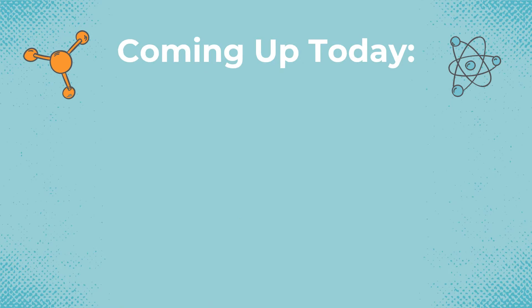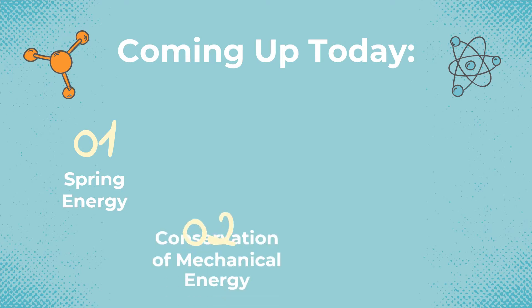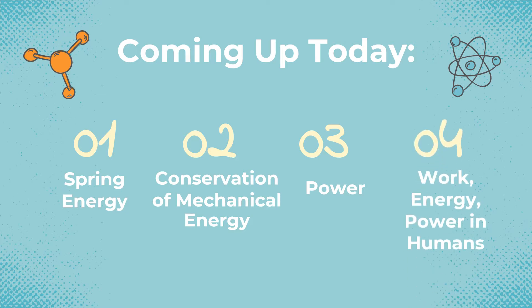Coming up in today's lecture, we will start off by looking at spring energy, another type of potential energy, before looking at the conservation of mechanical energy, which is an extension of the universal law of conservation of energy, made more applicable to our real world. We'll then look at power — the rate at which work is done or energy is expended — before having a look at work, energy, and power in humans and animals.